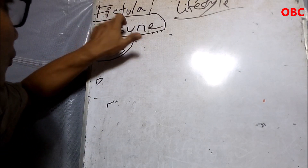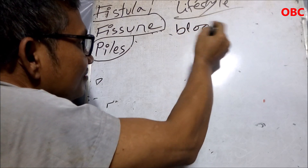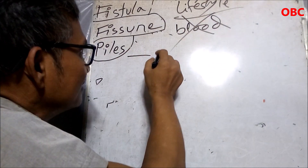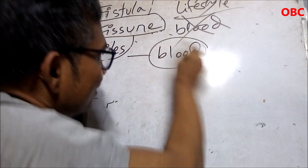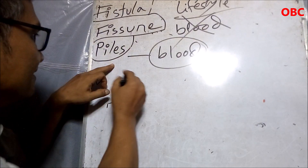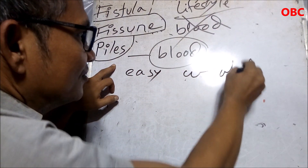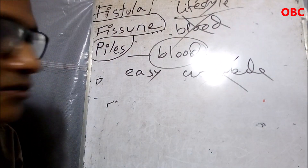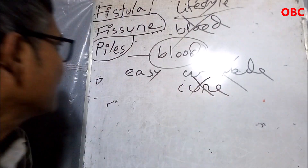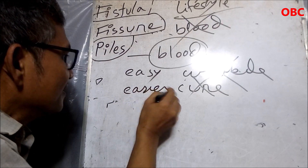In case of fistula and fissure, you may not have much blood. But if you have piles, you will have blood in your stool. Piles is much easier to manage — it's not so difficult — but it is not curable without an operation.